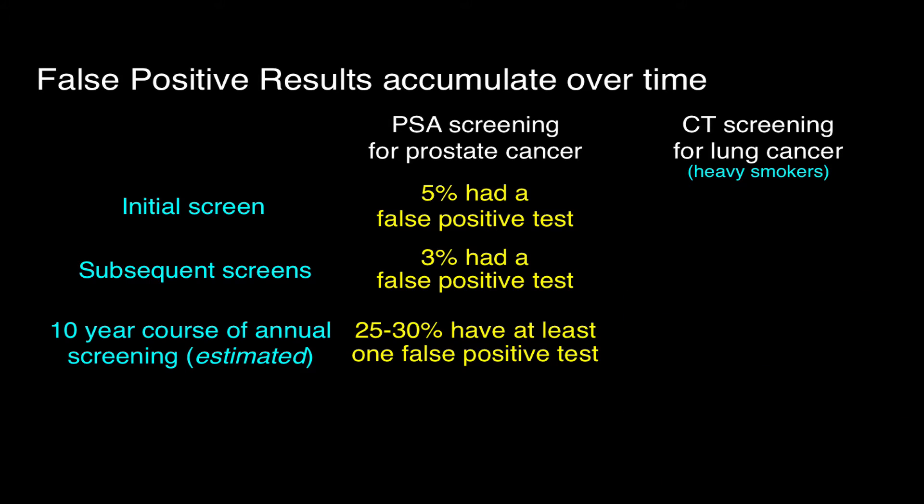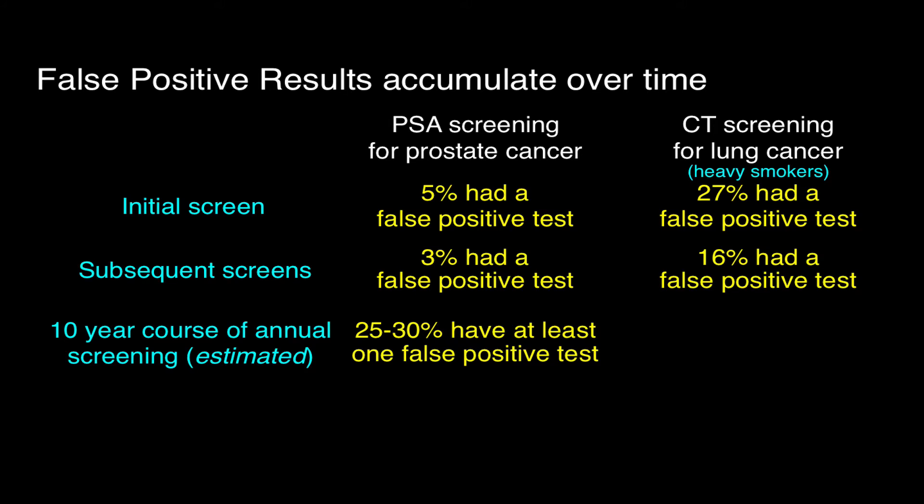For CT spiral screening for lung cancer in heavy smokers — results from the NLST — on the initial screen, 27% had a false positive test, which simply reflects that there are a lot of lung nodules in heavy smokers. On subsequent screens, that went down to about 16%. But 70 to 90% would be estimated to have at least one false positive test over a 10-year course of annual screening.